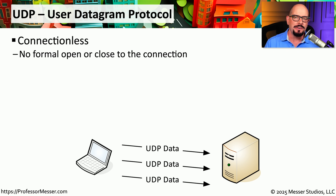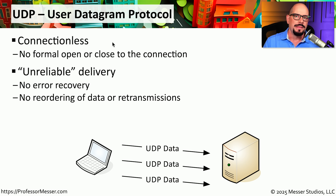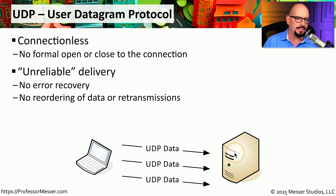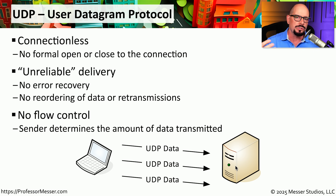Some protocols don't need that detailed level of reliability and the overhead associated with TCP. That's why we created UDP, or the User Datagram Protocol. UDP is connectionless — there's no formal process to start or end communications. We refer to this as unreliable delivery, meaning there's no way to know if data was received on the other side because there are no acknowledgements. Since there's no acknowledgement, there's no way to recover from errors, no retransmission, and no flow control.